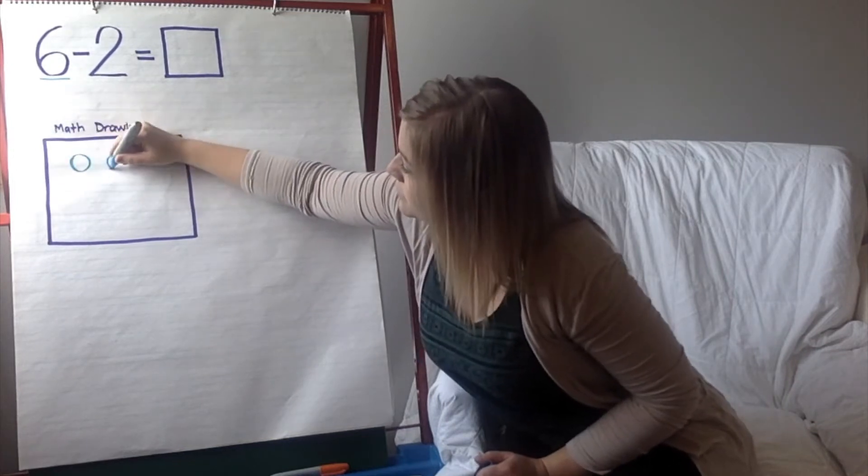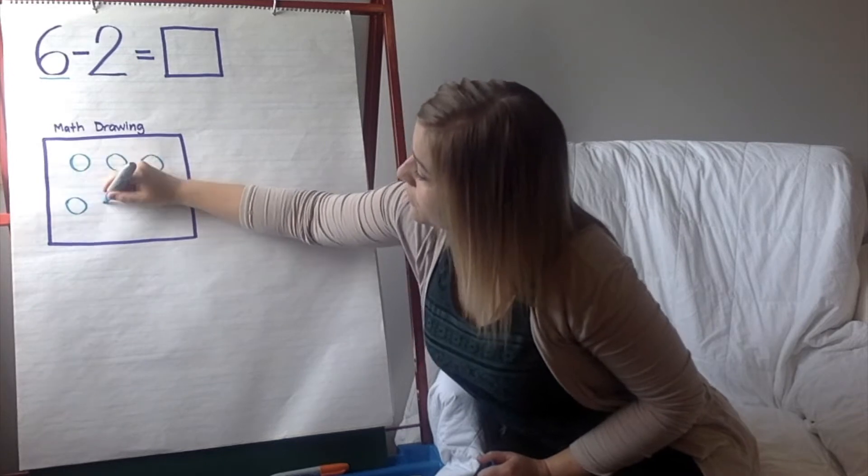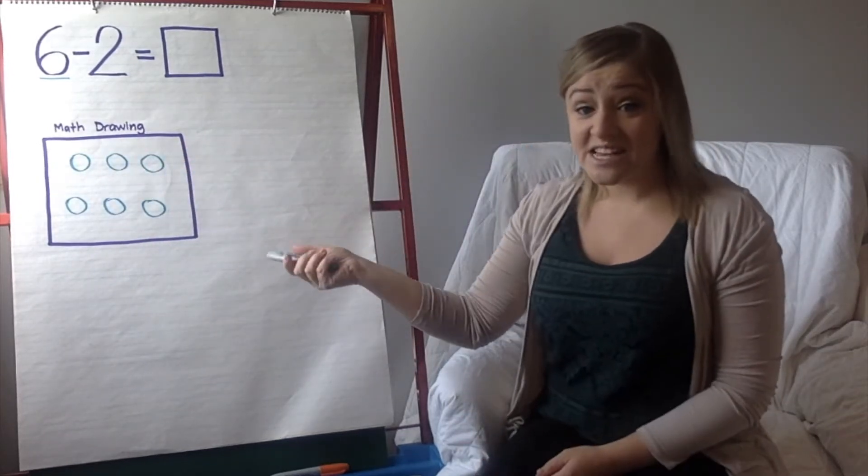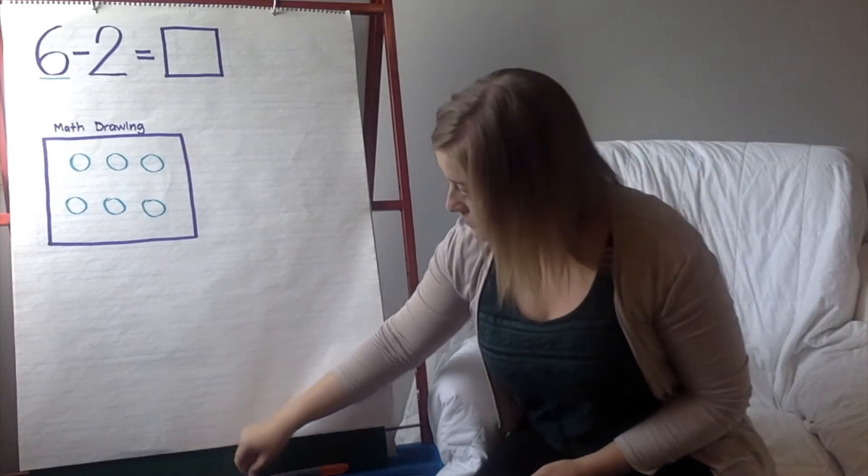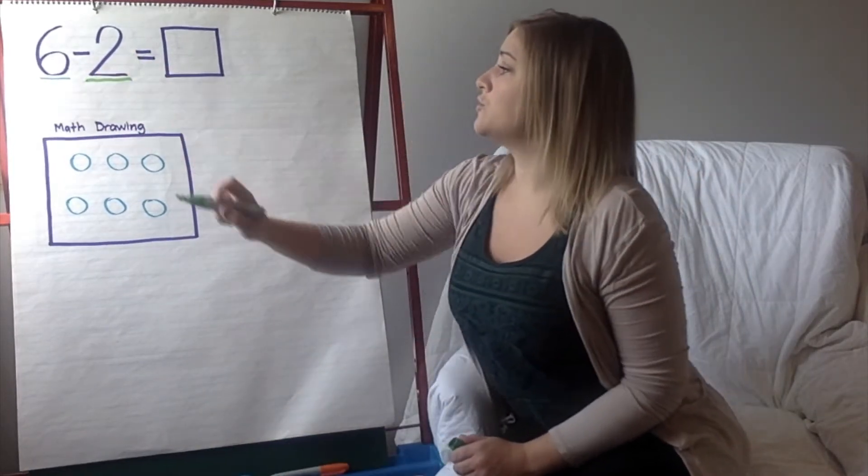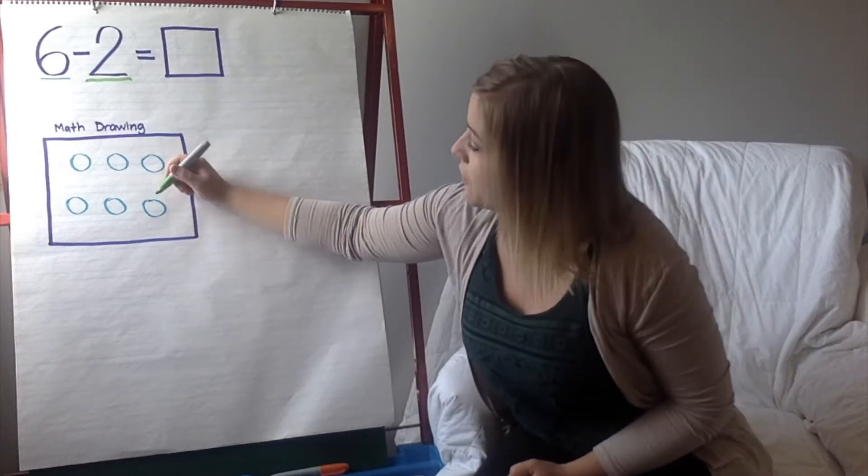1, 2, 3, 4, 5, 6. So, I have 6 circles in my math drawing. Now, with this green marker, I'm going to underline the 2. Now, I'm going to take 2 away from my drawing. So, I'm going to cross out 2 of my circles.